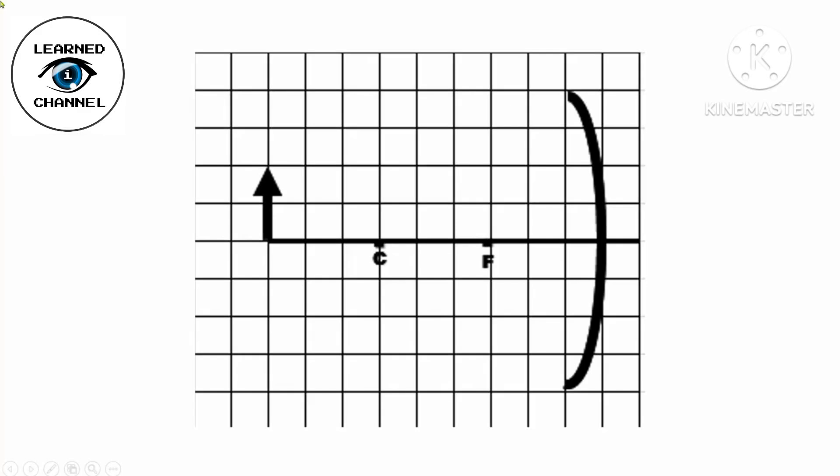Hello everyone, welcome back to my channel. Now I'm going to teach you how to trace the image form in curved mirrors. Let's start with the concave mirror. What will be the characteristics of the image formed if an object is placed beyond C?